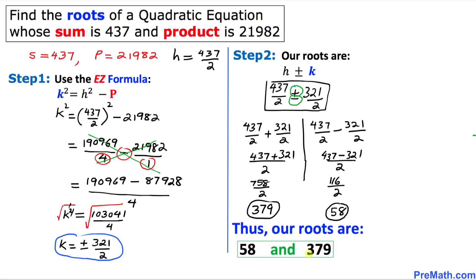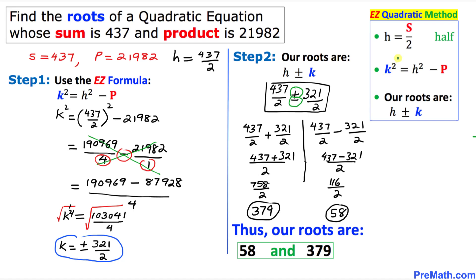Thus our roots turn out to be 58 and 379. We can see if we add these two roots we are going to get 437 and if we multiply them out we are going to get 21982. And here for your information I just wrote down these steps that we took during our calculations. Thanks for watching and please don't forget to subscribe to my channel for more exciting videos.